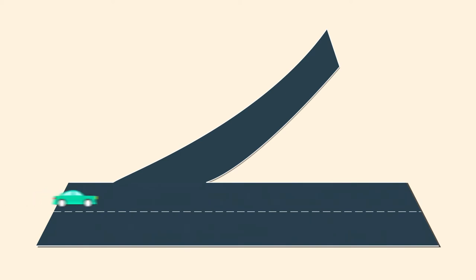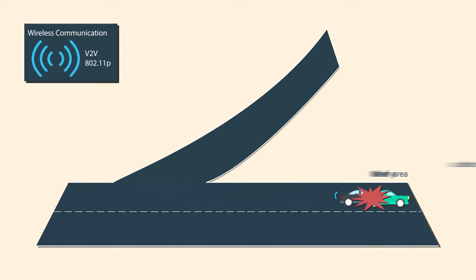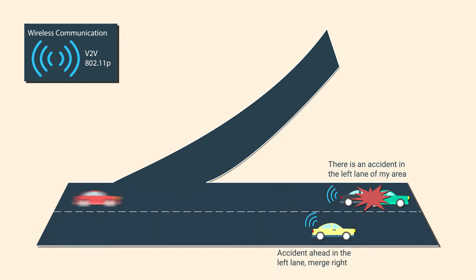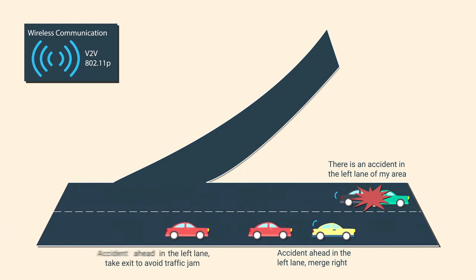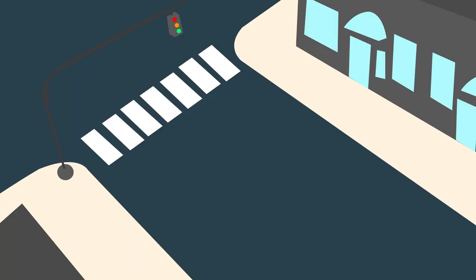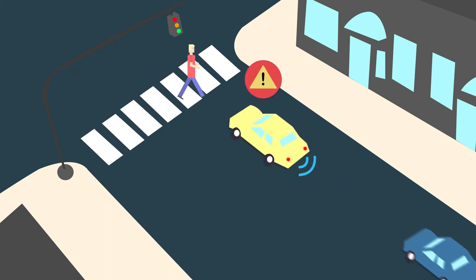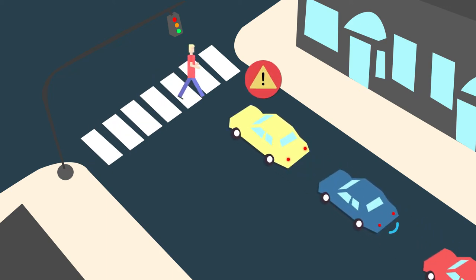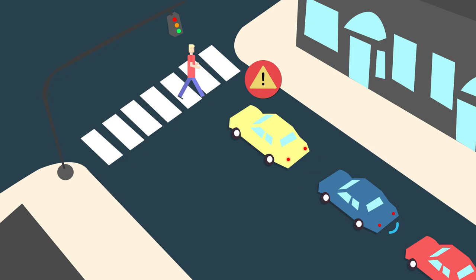The safety-related applications represent the main objective of inter-vehicular communications. When an accident is detected, a vehicle can continuously broadcast information about this critical situation to the approaching vehicles. When a vehicle brakes suddenly, it broadcasts information about its current status, which is used by the surrounding vehicles to quickly detect the sudden braking.